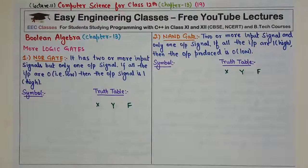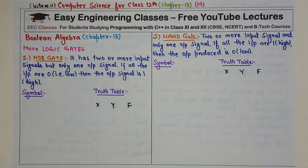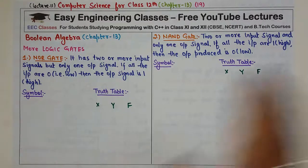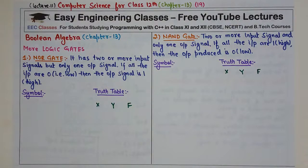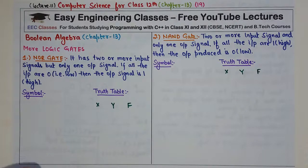Hello everyone. Continuing with the topic of Boolean algebra, today we are going to see about more logic gates. Earlier we have seen AND, OR and NOT logic gate, but now we will see four different logic gates: NOR gate, NAND gate, XOR gate and XNOR gate.